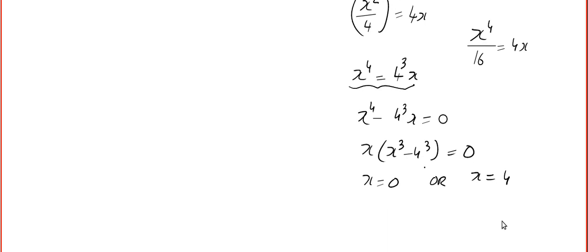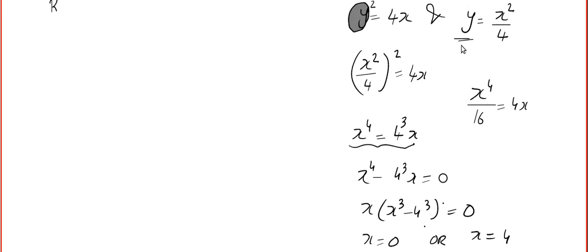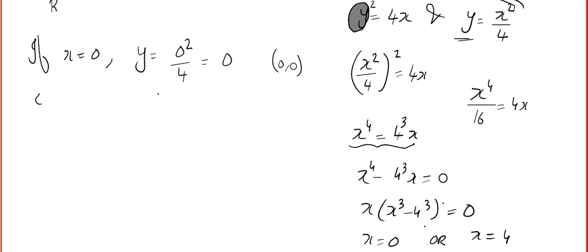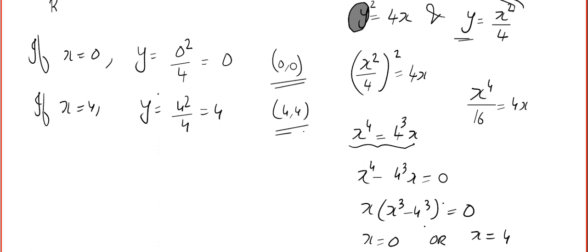I skipped one step but you can understand. Now I find the corresponding y values for each x. If x = 0, then y = 0²/4 = 0, giving coordinate (0, 0). If x = 4, then y = 4²/4 = 4, giving coordinate (4, 4). So we have two intersection points: the origin and (4, 4).